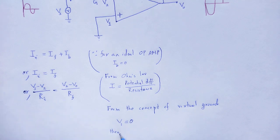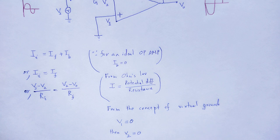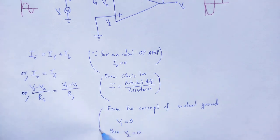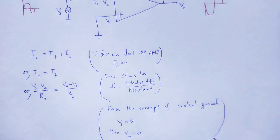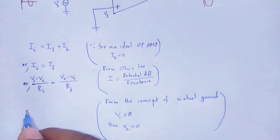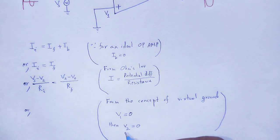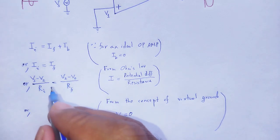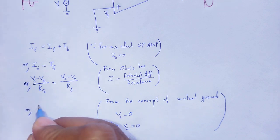Then V2 is virtually grounded, that is also zero. Now we use that concept. In place of V2, we substitute zero.